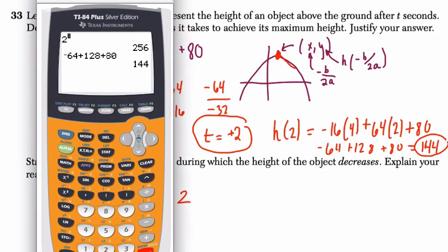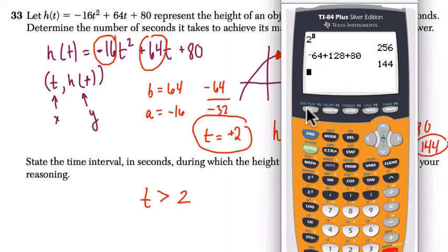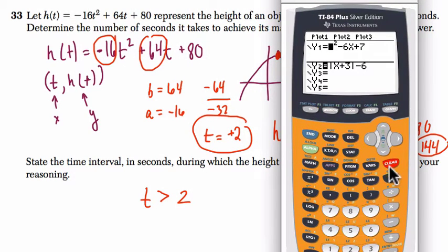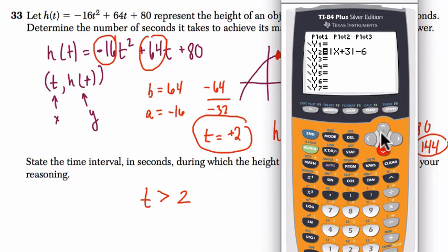What about doing it on a graphing calculator? Well, you go to the y equals button here. You want to clear off any old functions here. Okay, so now just enter in your function, negative 16x squared. And remember the negative sign's on the bottom. Don't use the subtraction sign. Plus 64x plus 80. Press graph.